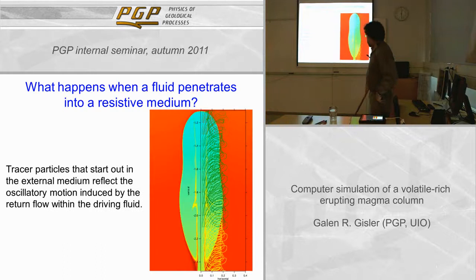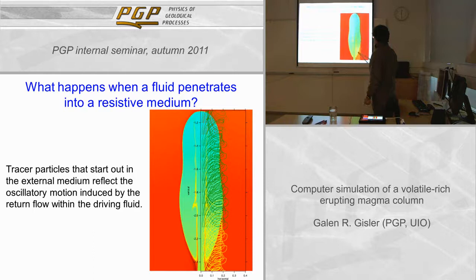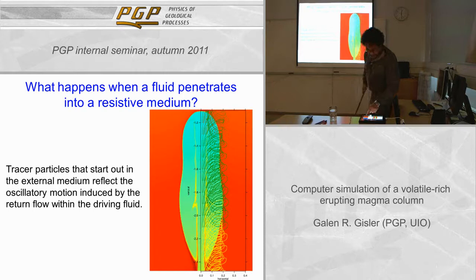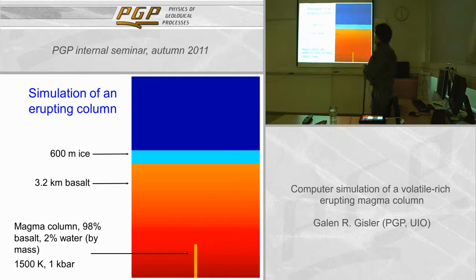If we look at the trajectories of tracer particles that initially start out in the external medium, we see that they undergo these oscillations, partly because of the return flow in the plume itself, and also because of being swept up and entrained in the driving fluid. I'll now run you through a movie of the particular simulation I'm focusing on here. I've done a bunch of these, but I'm just going to show you this one in the first instance and show a couple more later on.